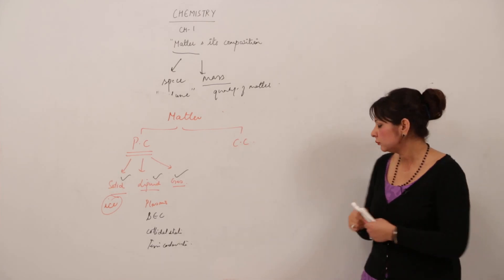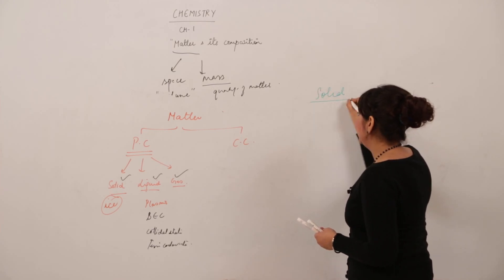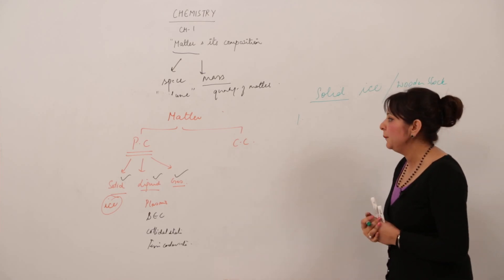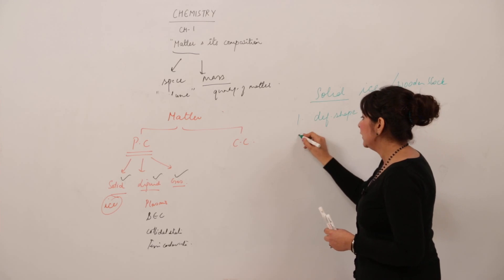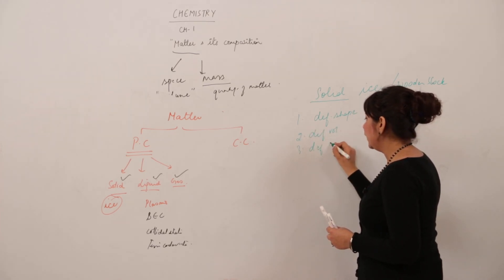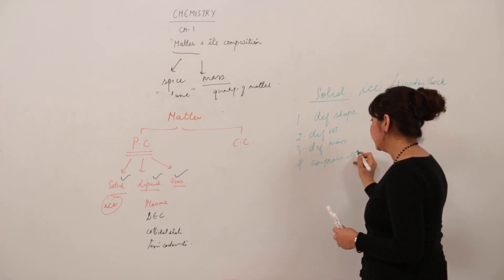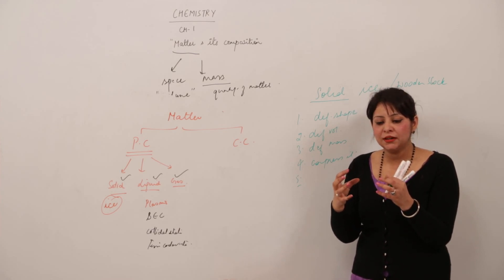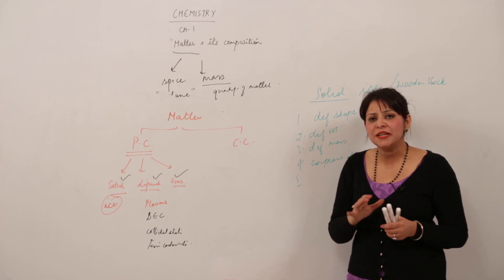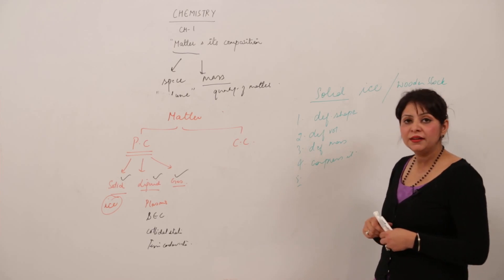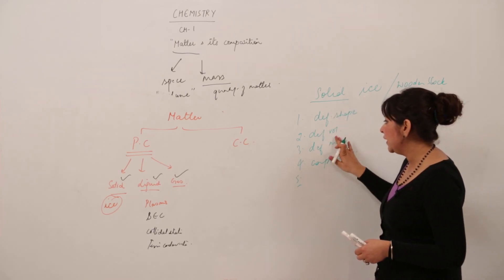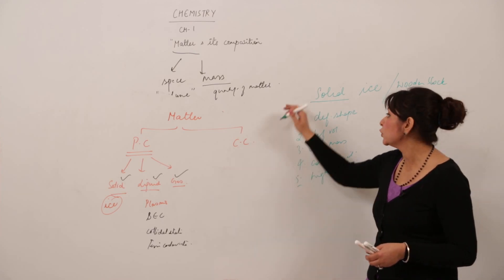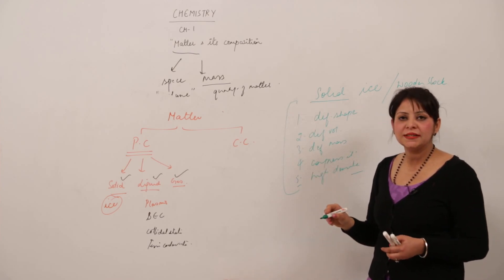Let's look at the properties. In solid — for example, ice or a wooden block — they have definite shape, definite volume, and definite mass. You cannot compress them; that means you cannot make the particles come closer to each other, so solids are almost incompressible. They also have high densities. Any substance fulfilling these five properties exists as solid at room temperature.